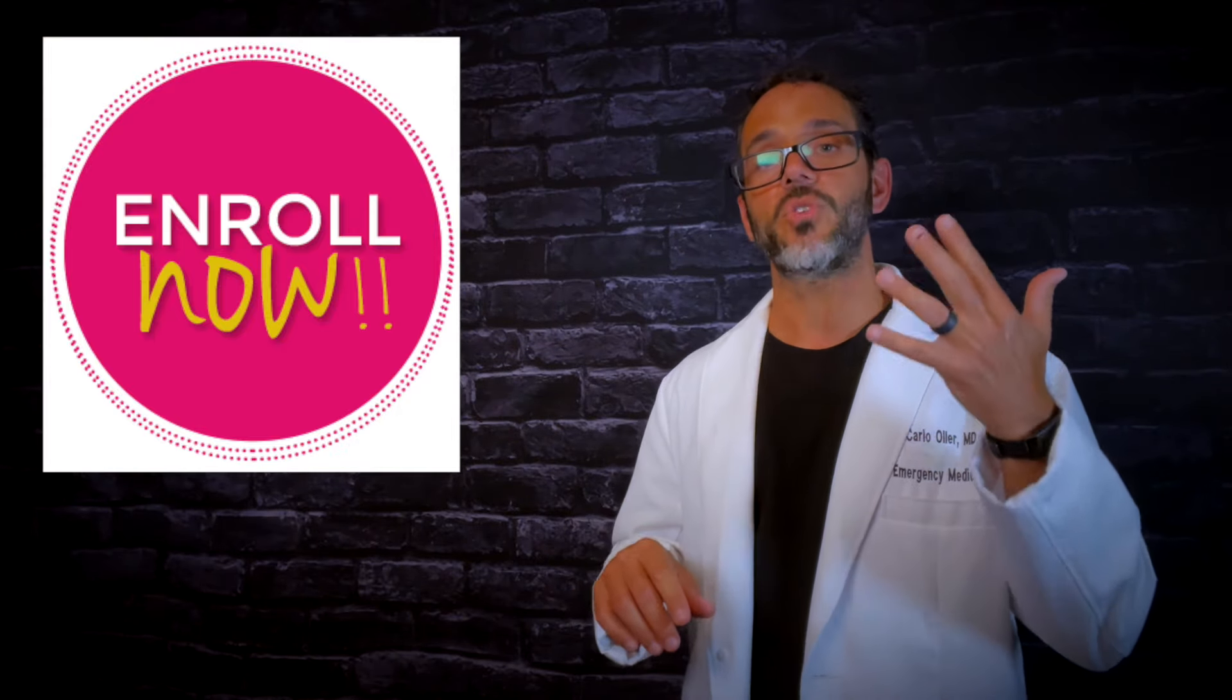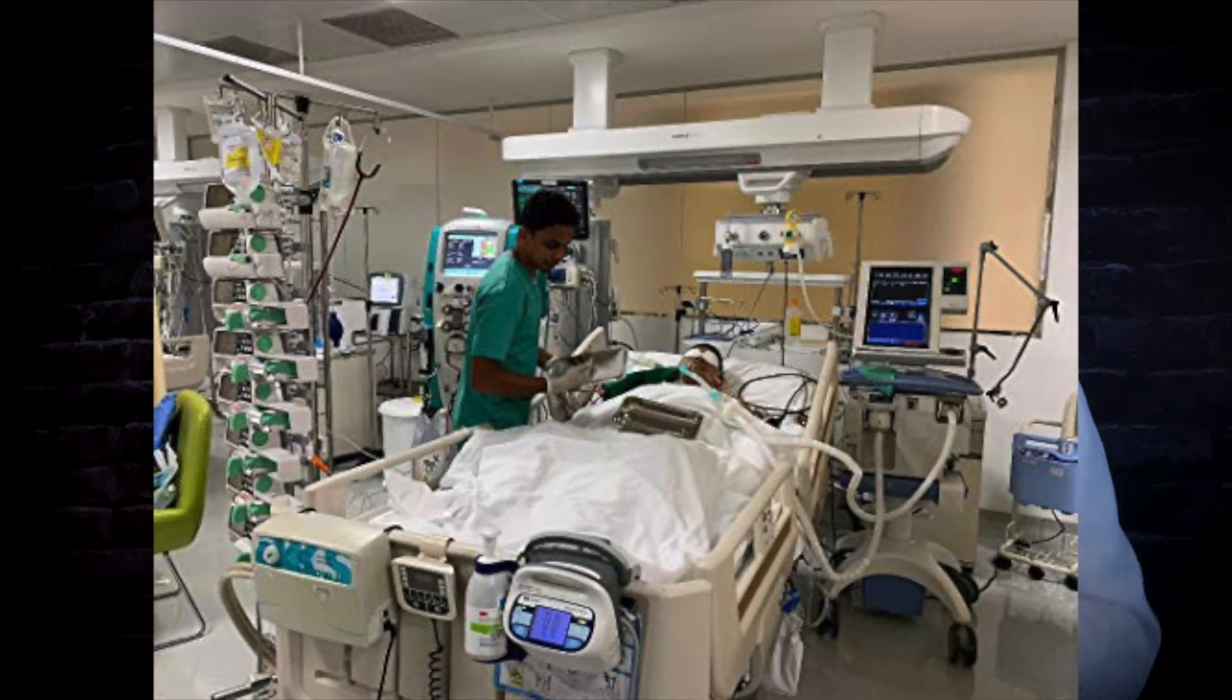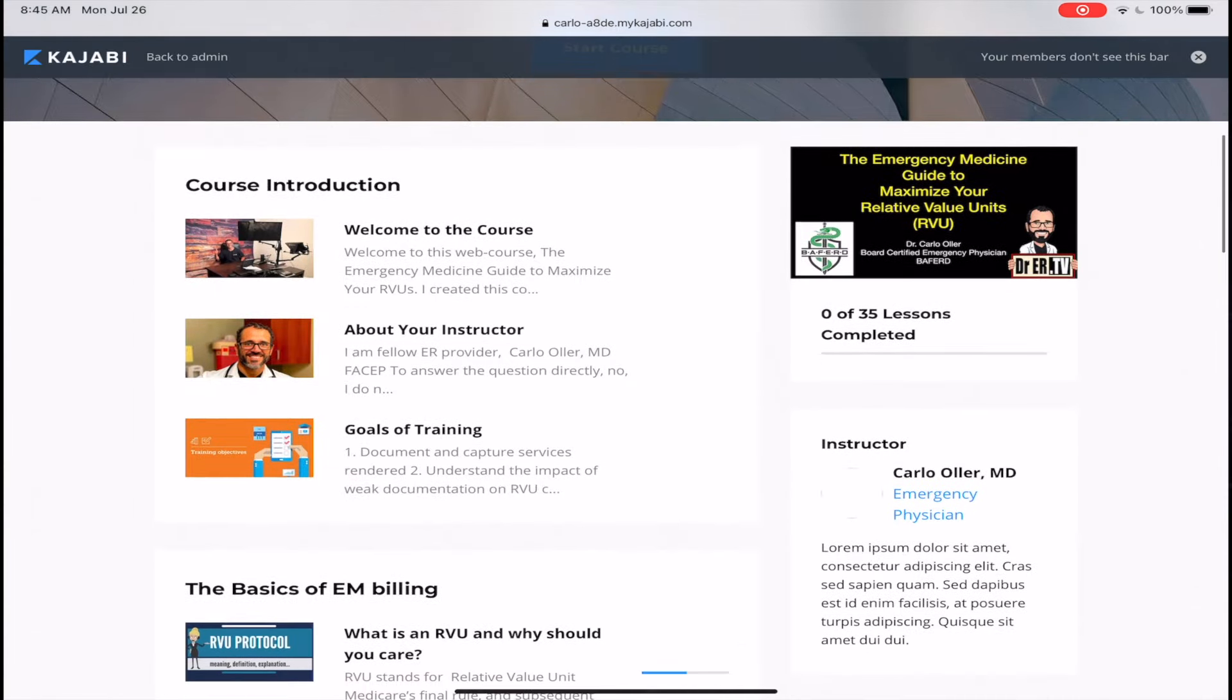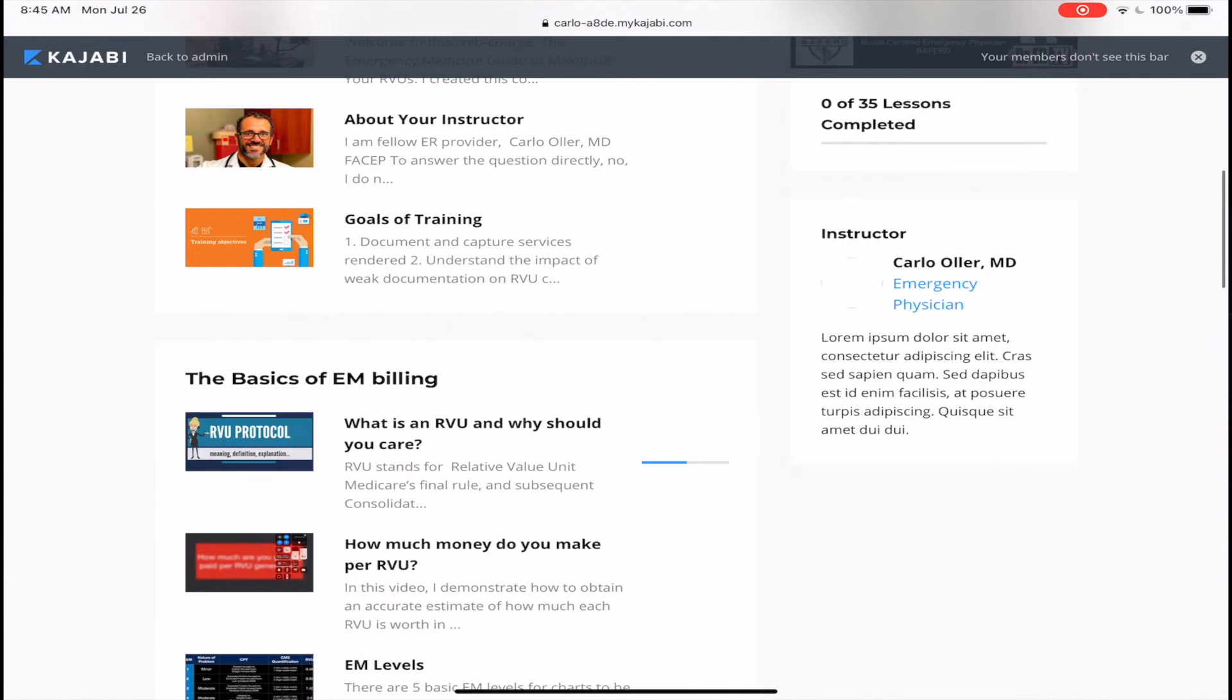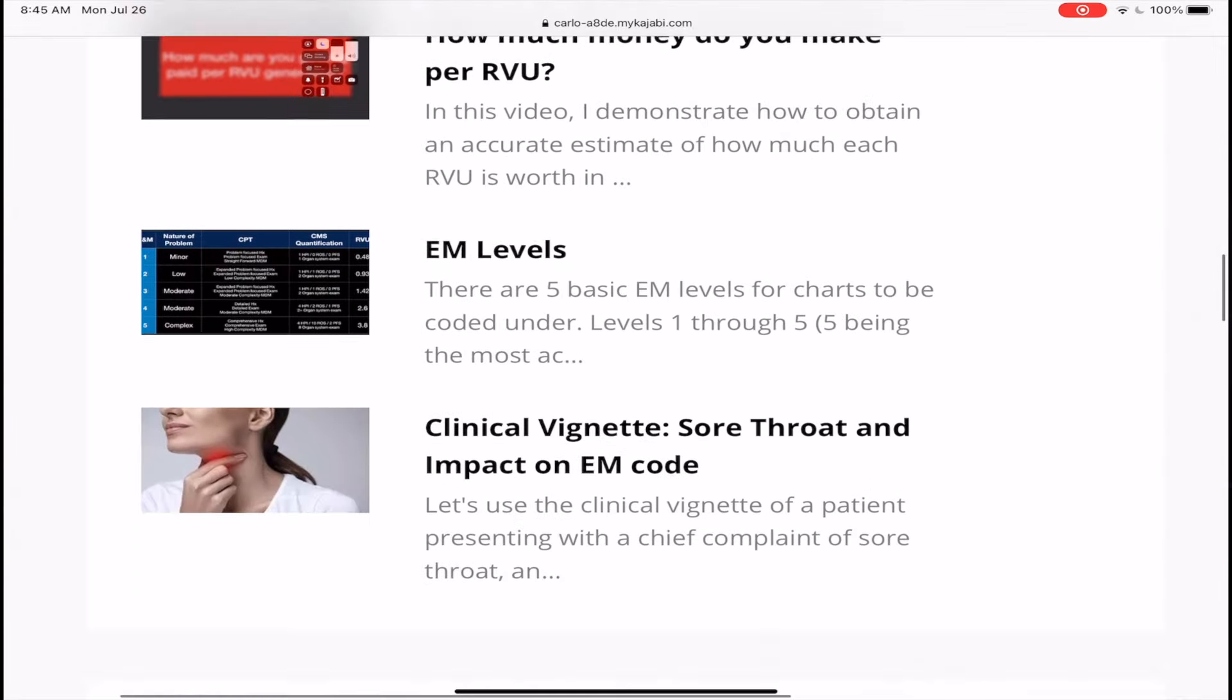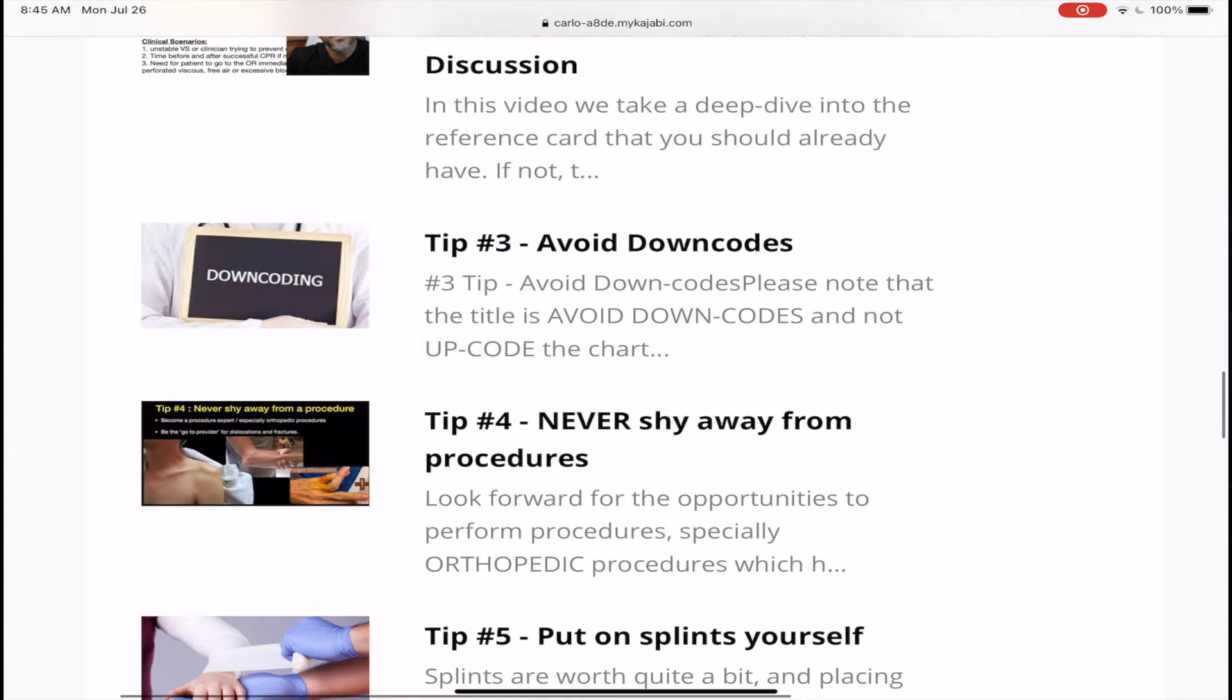I'm going to talk about the five levels of EM coding, levels one through five, and what documentation needs to be present for each level. Critical care, and how to document critical care so you can get the RVU capture you need. What diagnosis, what medications, what procedures highlight the fact that you use critical care. The fact that most people only document 1% critical care when nationwide we should be 8 to 9% critical care documentation.